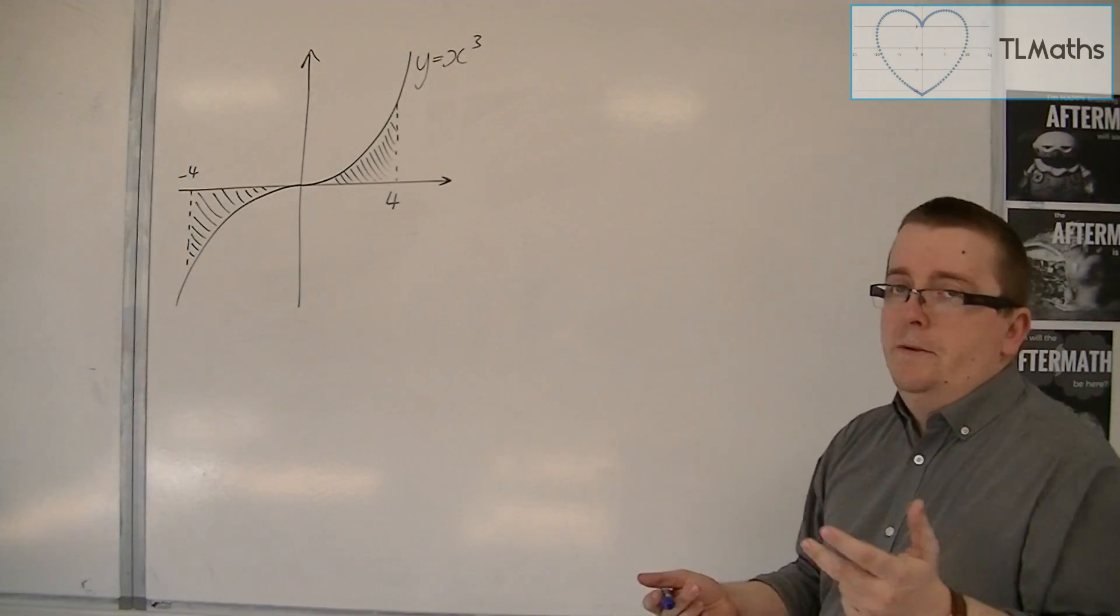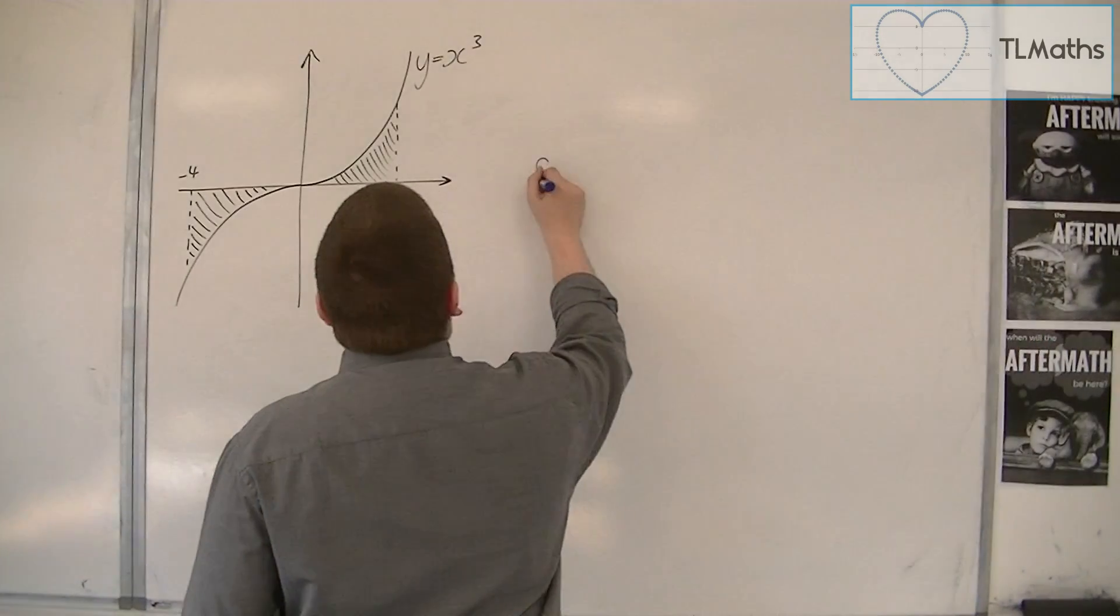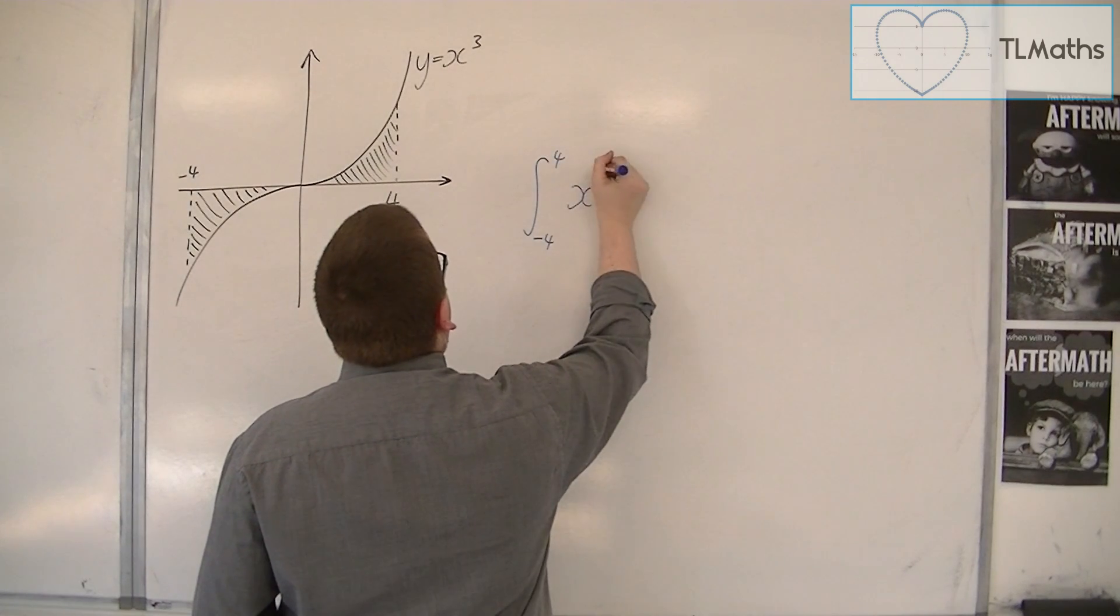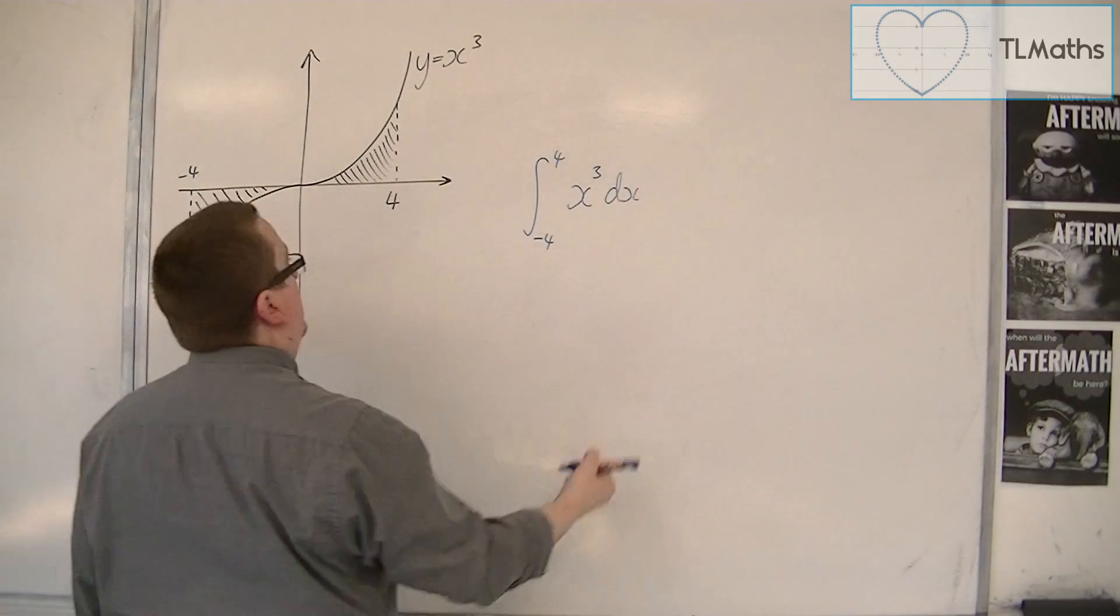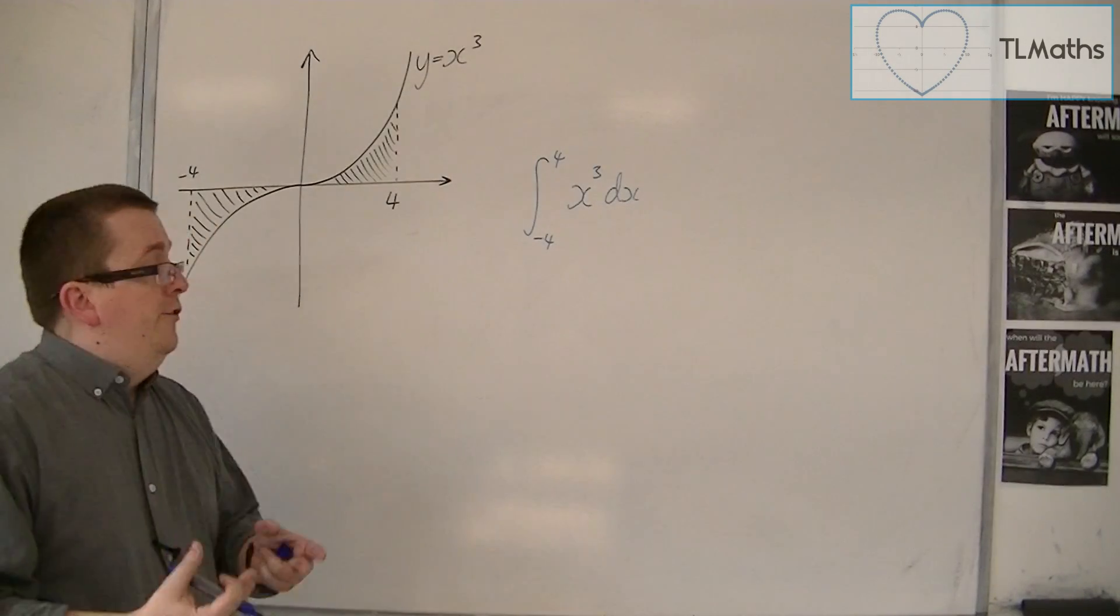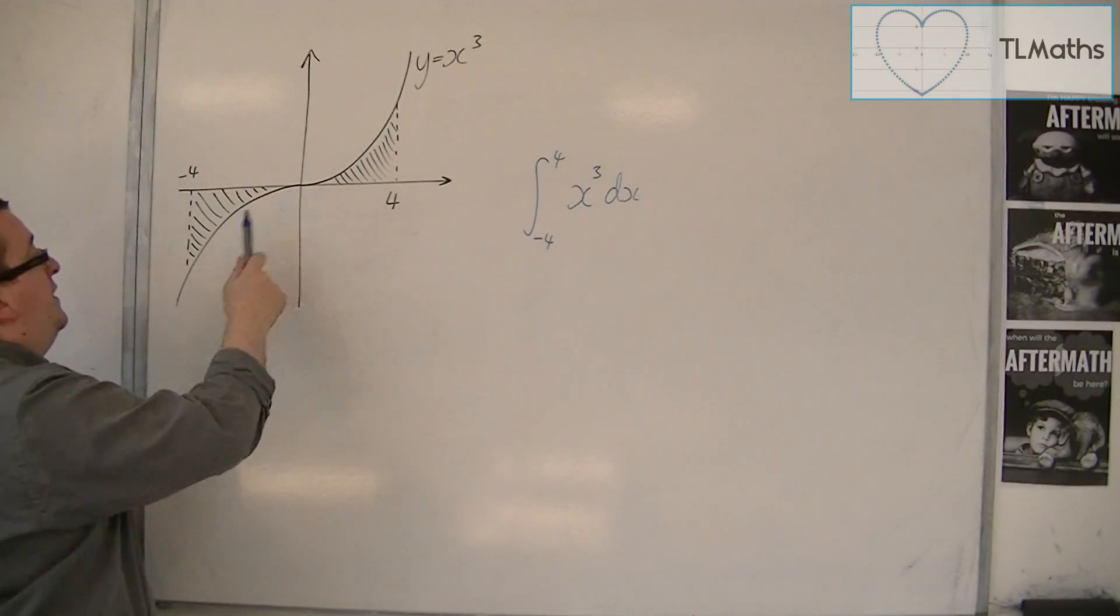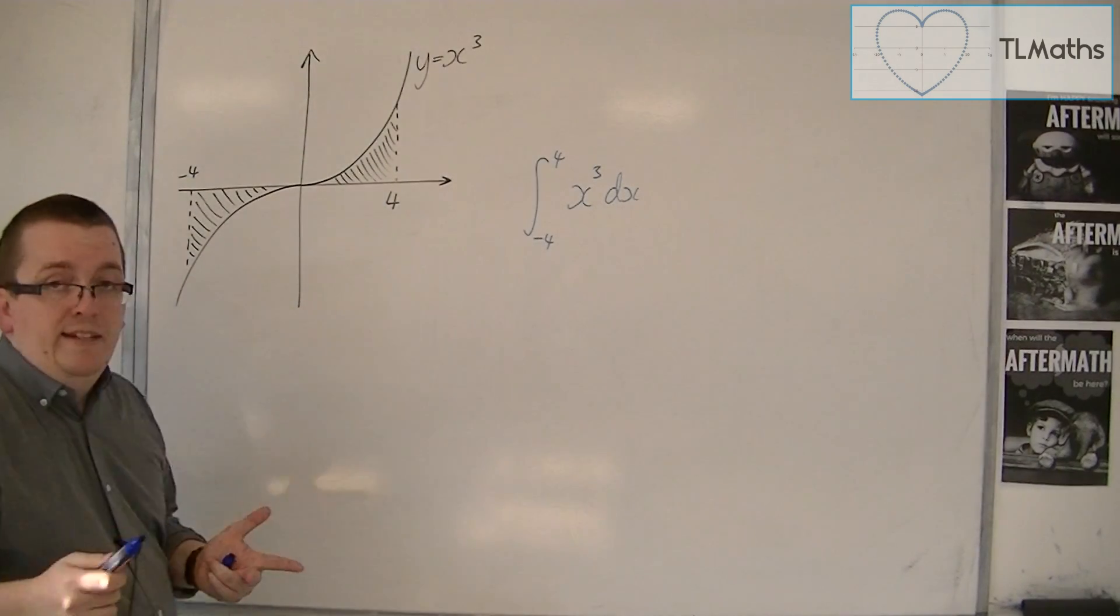Now it will be tempting to write down that I would find the integral between minus 4 and 4 of x cubed dx and write it down like this, because ultimately I know that finding the area between a curve and the x-axis I would write it down this way.